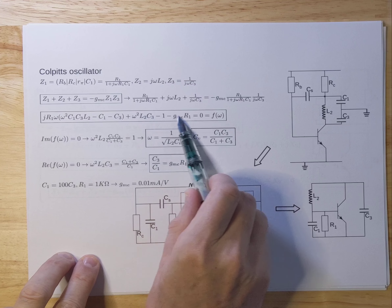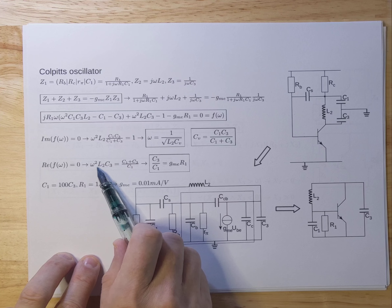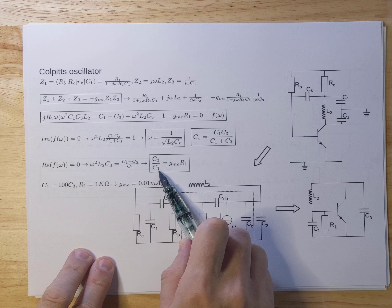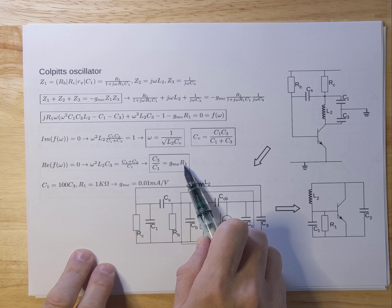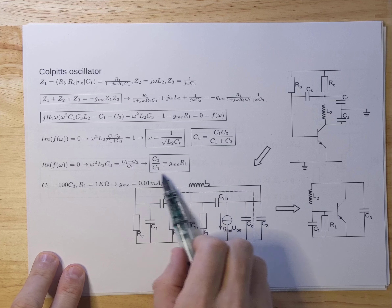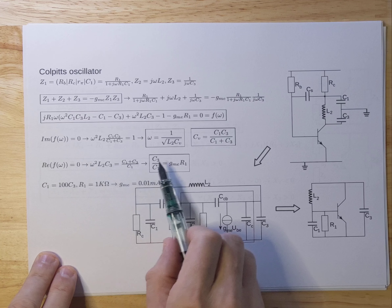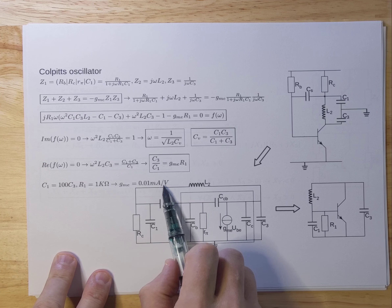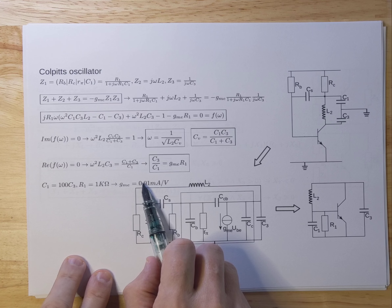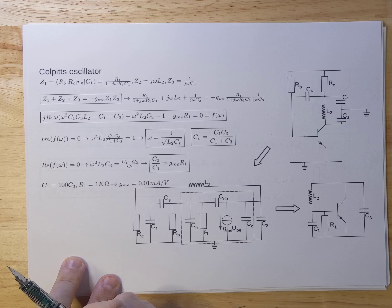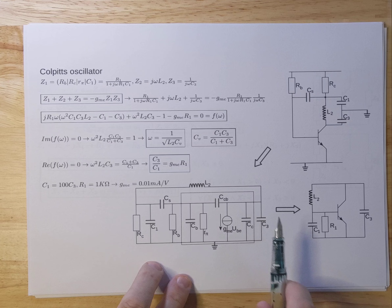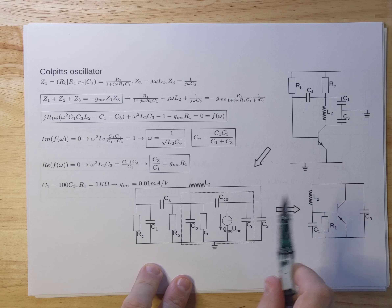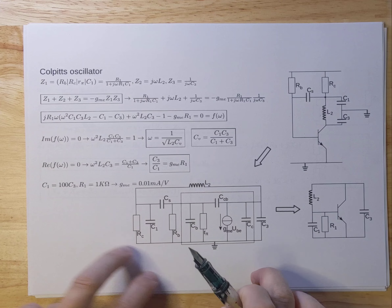Now let's take a look at the real part. Setting this real part to zero and working it out, you get a very simple equation that depicts the ratio between C3 and C1 equals the transconductance times R1. To give you an idea, let's plug in some numbers: if C1 is 100 times C3 and R1 is about 1 kilo-ohm, you get a transconductance of only 0.01 millisiemens per volt. So with a very small transconductance you already have oscillatory behavior. This approach can be used for many different configurations — for instance an oscillator with two inductors and a capacitor — and you can go through a very similar calculation to get values for that.